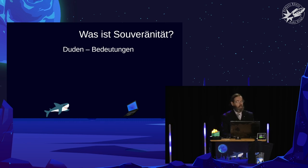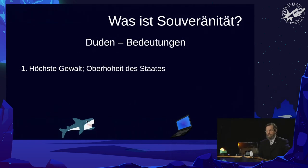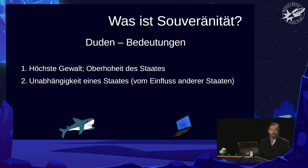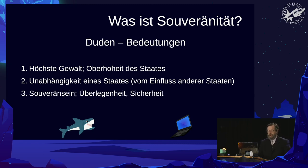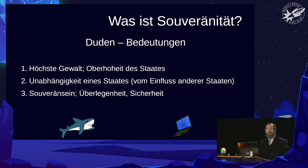If you look at the definition, an old man like me would do that in the Duden. In this dictionary it says: sovereignty is the highest order of power. The second definition is the independence of a state from the influence of other states. And the third: sovereignty — being secure and able to navigate the world on your own. That would be a dream in terms of software.